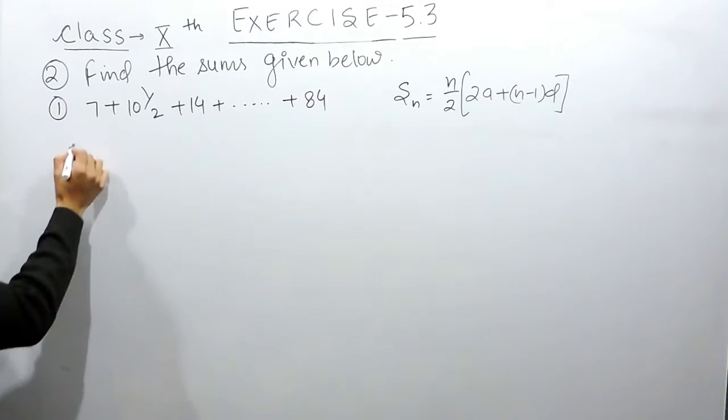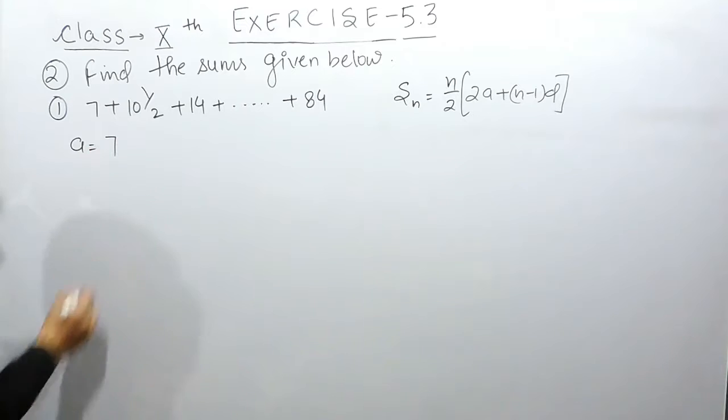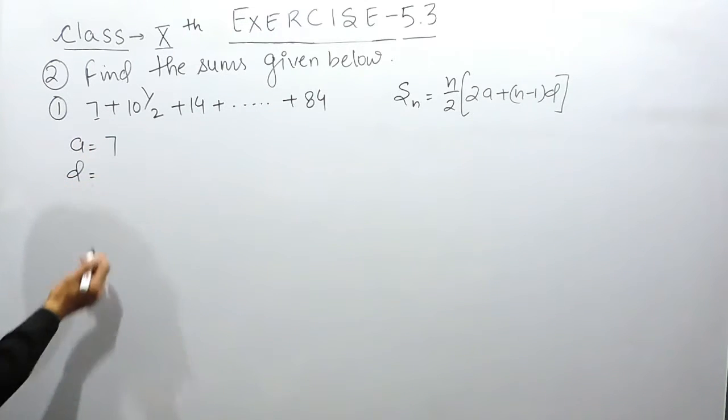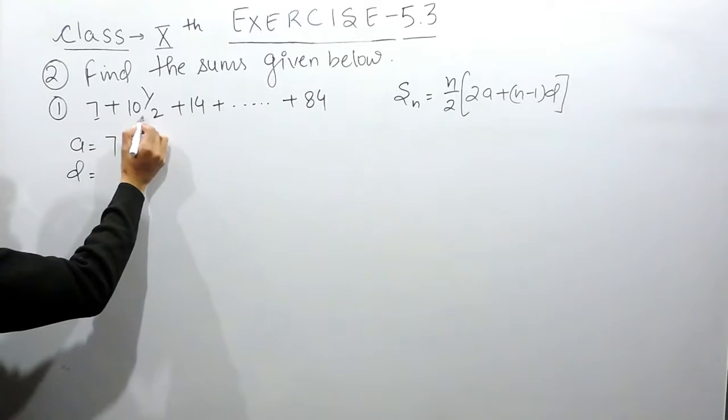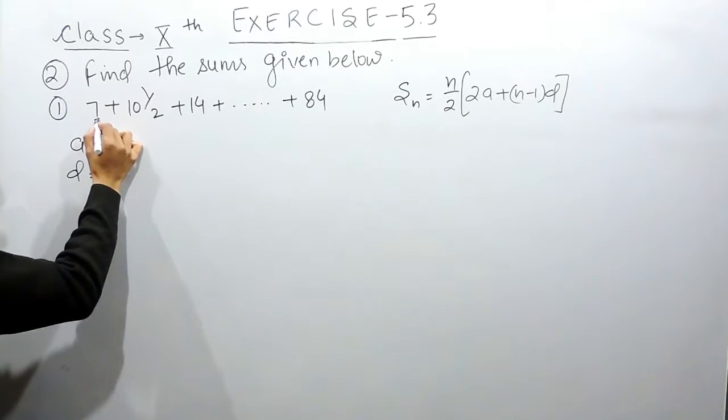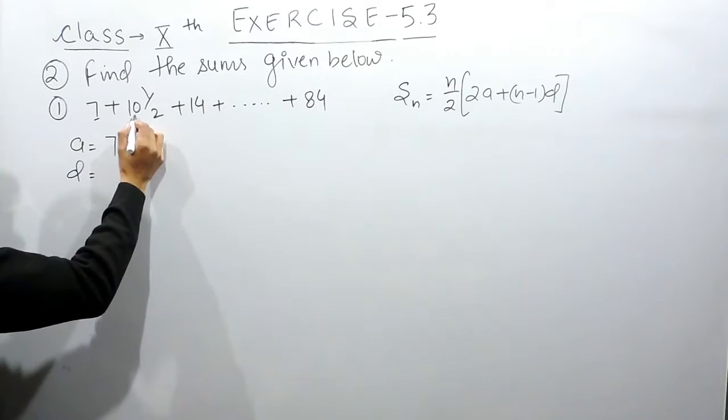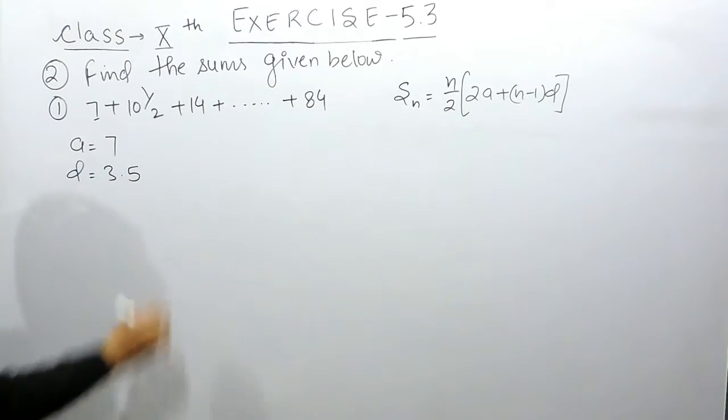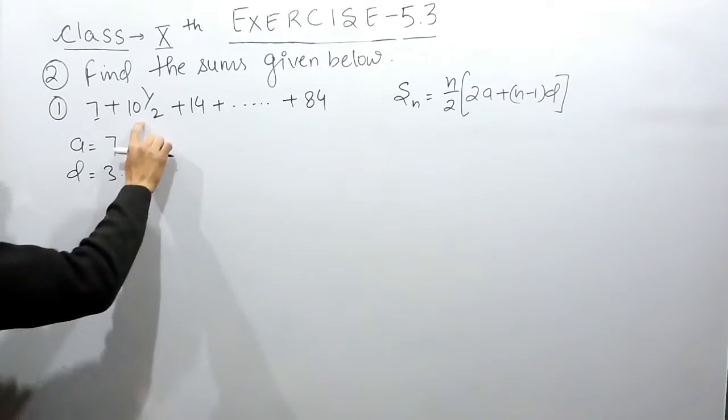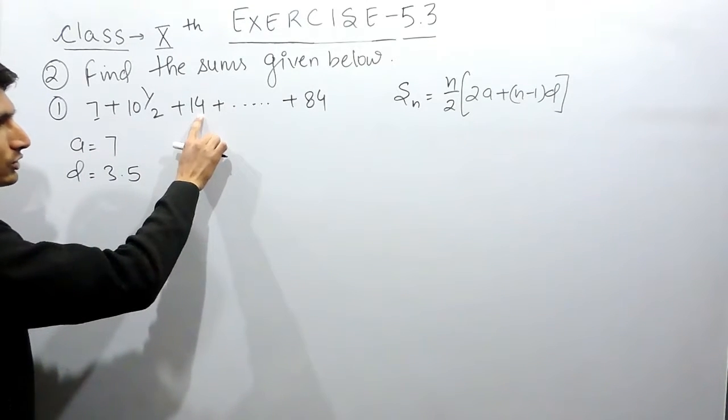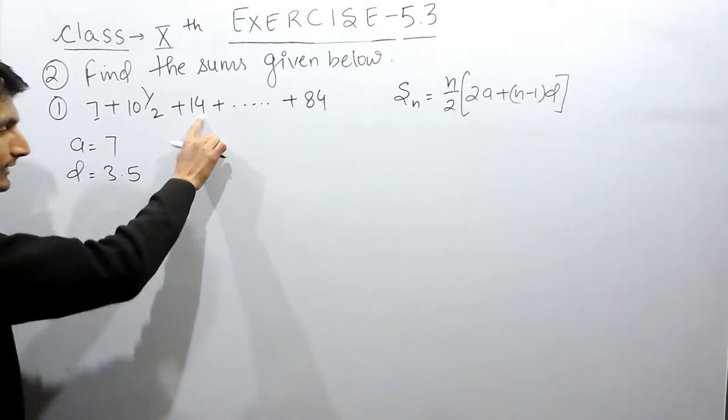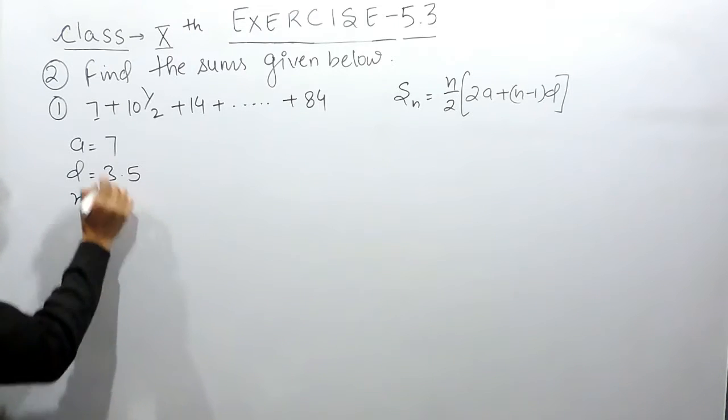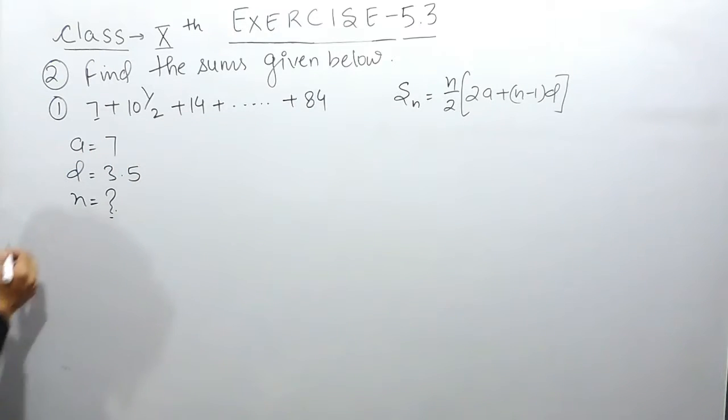In this case, I know the first term as 7, and the common difference is 3.5. If 7 is the first term and the second term is 10.5, you must have added 3.5 to this to make this in AP, and again if 3.5 is added to 10.5, it will become 14.